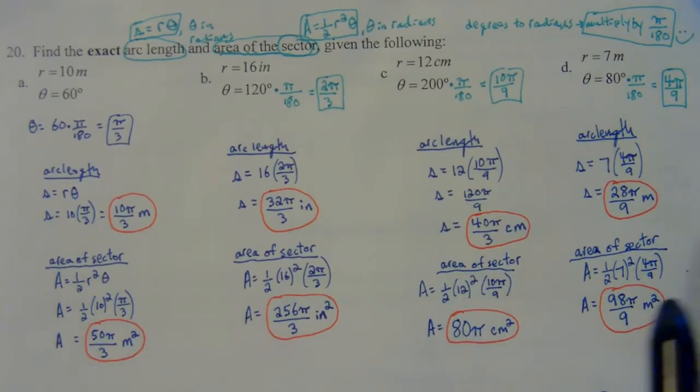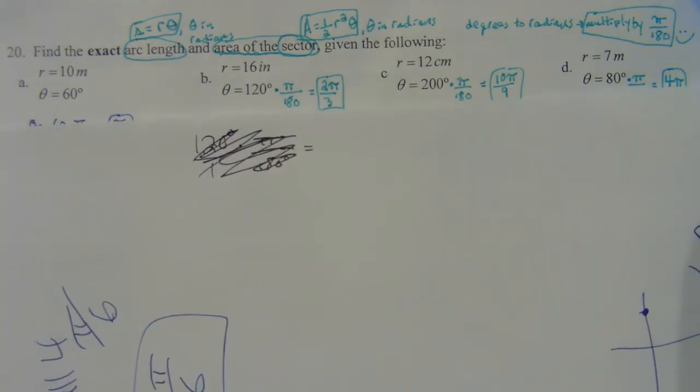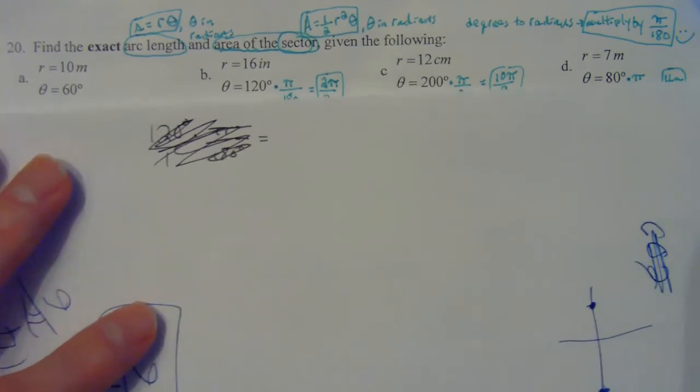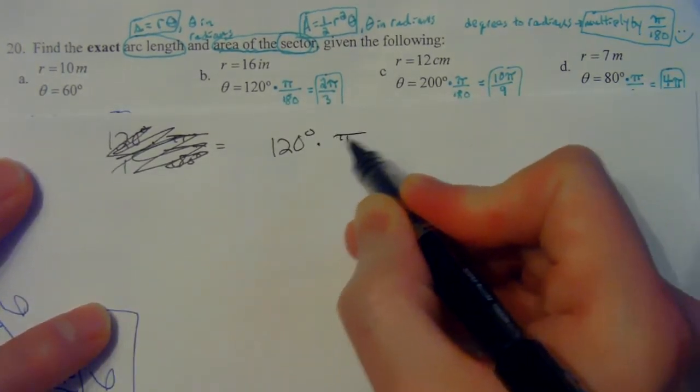Let's do one from scratch. If I give you the radius of 16 and theta is 120, the first thing you got to do is take the 120 degrees and times it by pi over 180 to switch it to radians.